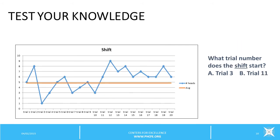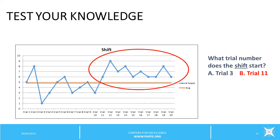Here's another example showing a shift. At what trial number does the shift start? A shift is indicated by seven or more continuous data points above or below the mean, so the answer is B. The shift starts at trial number 11, where you can see ten data points in a row all above the mean or average value.